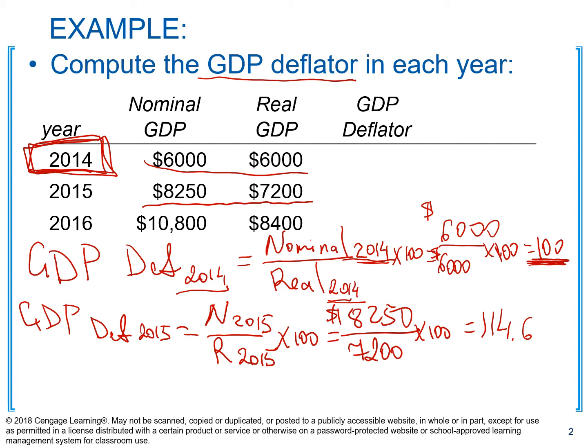Remember, GDP deflator is an index that reflects the level of prices in the economy. So if you're an economist and you only have these two GDP deflators in front of you — knowing that 2014 is the base year — you can see the GDP deflator increased from 2014 to 2015. This tells you that the level of prices in the economy between those two years has actually increased. It's now at the 114.6 level compared to the base year.